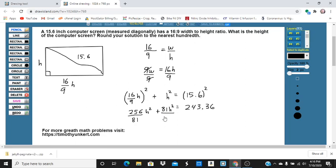Now, we have 1h² here, but the way I'm going to write it is 81h² over 81. So if I combine these, I get 337h² over 81. Which really, we're going to multiply both sides by 81. So to save some space, save some time, it's going to be 243.36 times 81. And now we're going to divide both sides by 337.